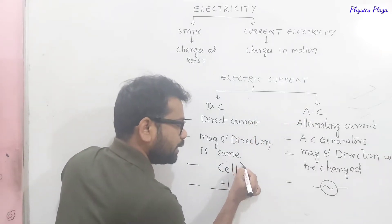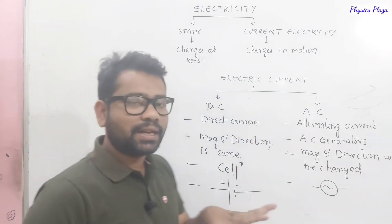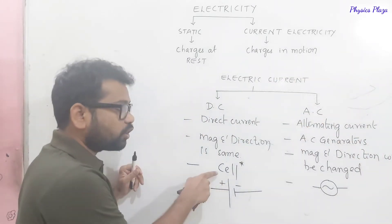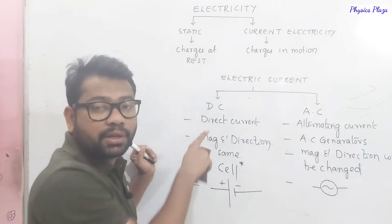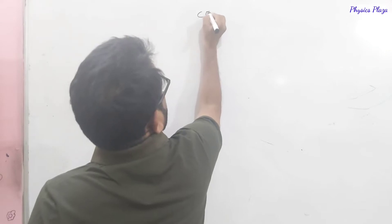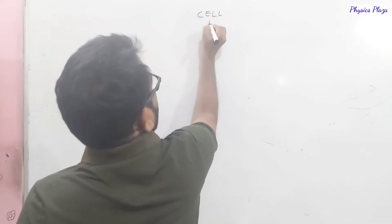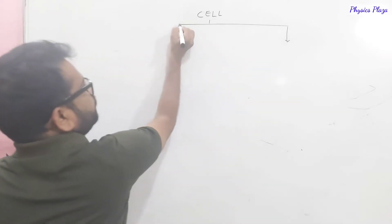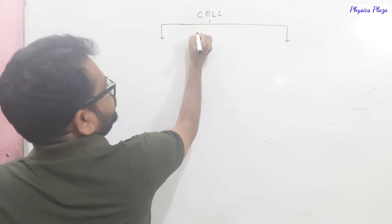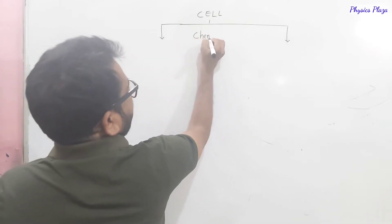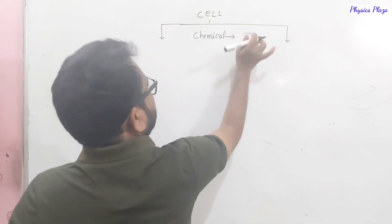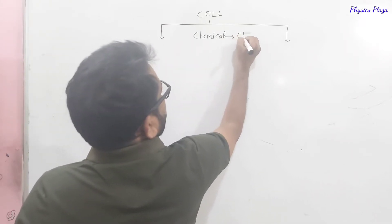Now we will discuss in detail what is a cell and what are the types of cells. A cell is a device which converts chemical energy into electrical energy — this is very, very important. In examinations, they will directly ask you to define the cell.